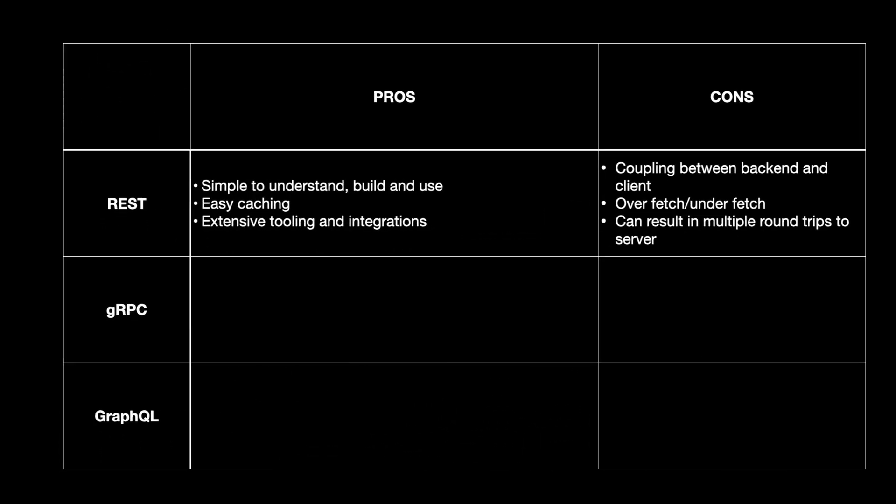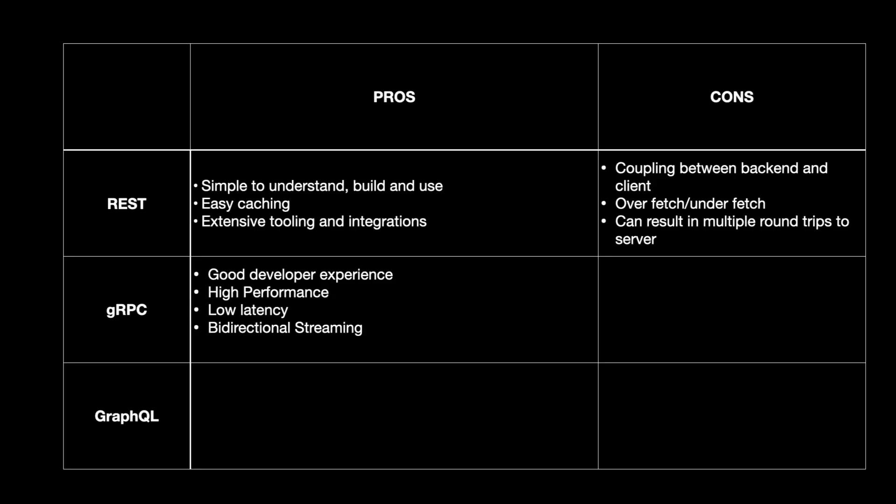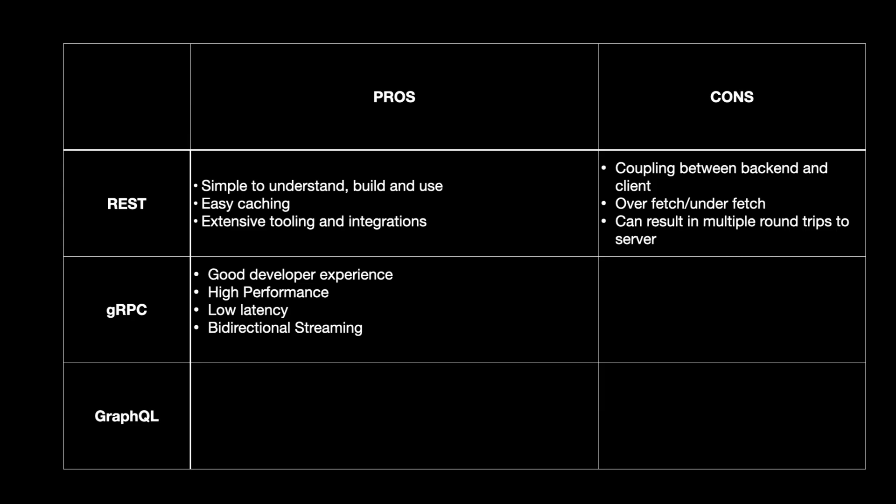So, gRPC — there are a lot of pros and cons. One of the biggest advantages is that you can build methods specific to what you want, so a use case like deactivating a user is quite trivial. The fact that it feels like calling a different class without overthinking it makes gRPC an option with excellent developer experience. One of the most interesting aspects of gRPC is that it's built with performance in mind — high performance and low latency are at the heart of gRPC. And if you are looking for bi-directional streaming of data, gRPC is perfect for that.